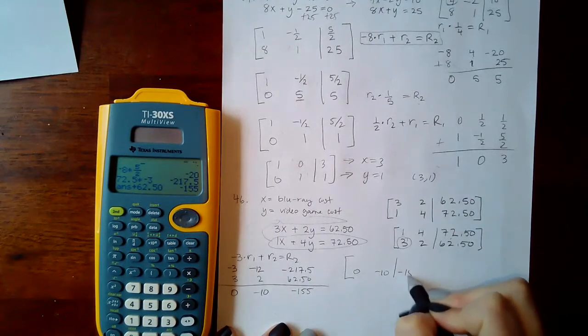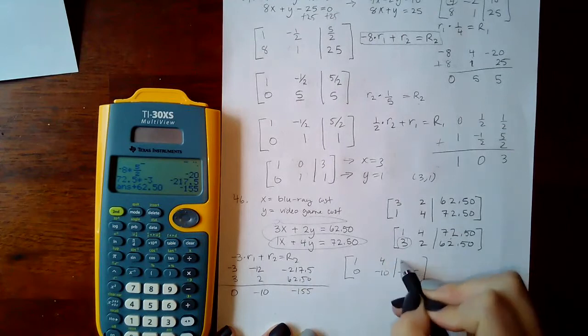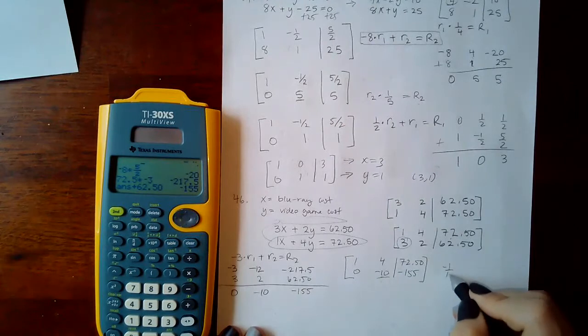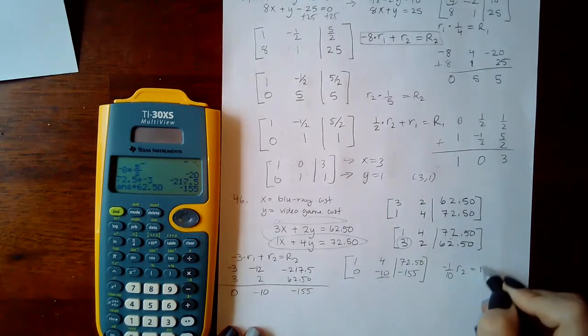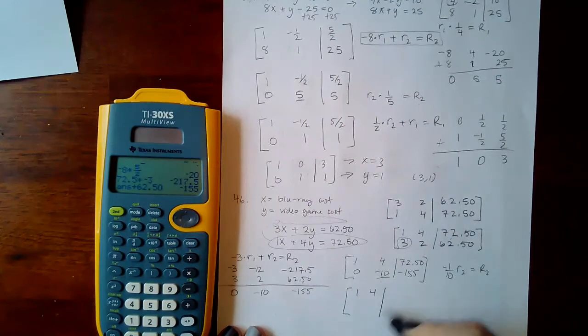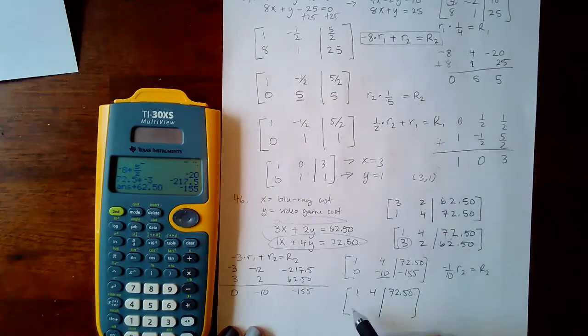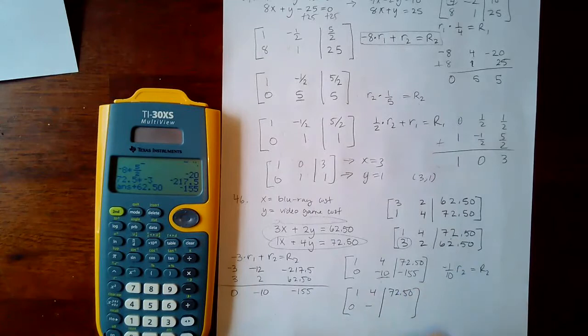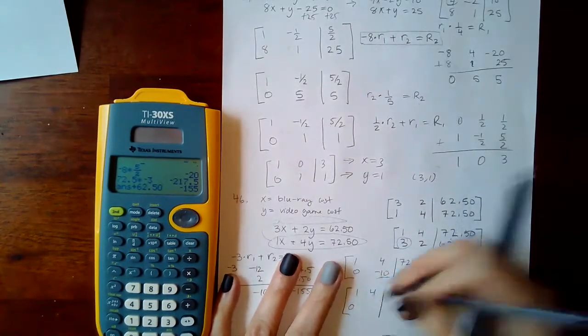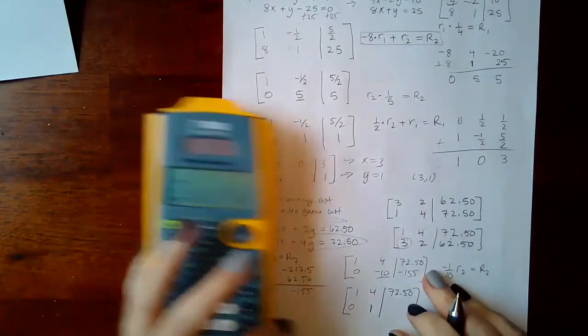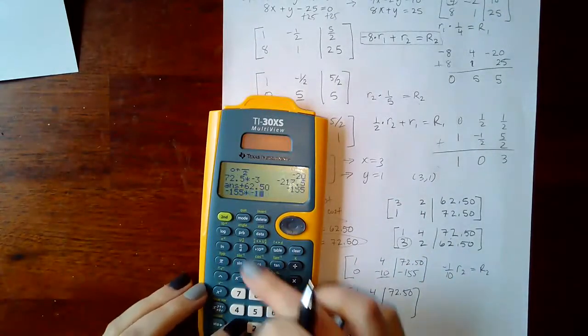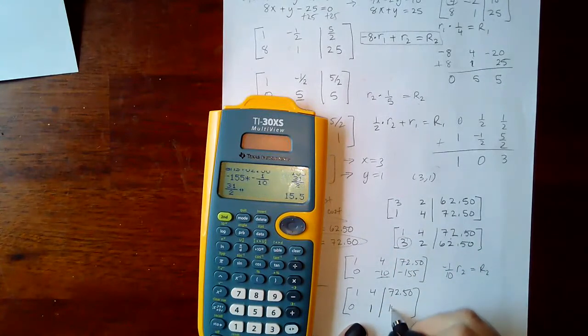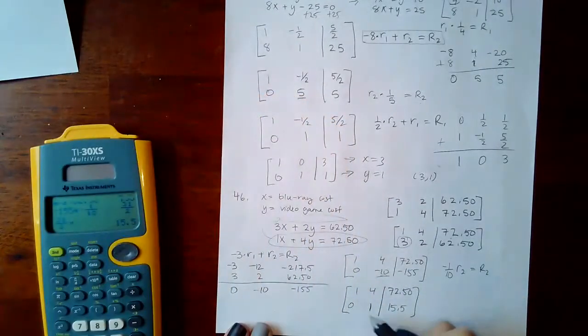Then now I need to make this guy a 1, which means I need to do negative 1/10 times row 2. So then 0 times negative 1/10 is 0, negative 10 times negative 1/10 is going to be a positive 1, and then negative 1/10 times negative 155 is 15.50.